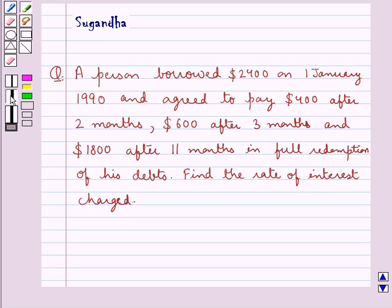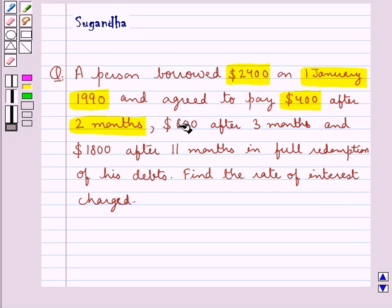Hello and welcome to the session. In this session we discuss the following question: A person borrowed $2400 on 1 January 1990 and agreed to pay $400 after 2 months, $600 after 3 months, and $1800 after 11 months in full redemption of the debt. Find the rate of interest charged.